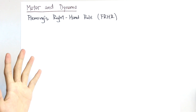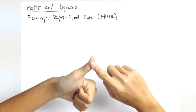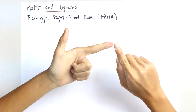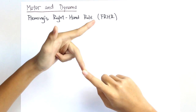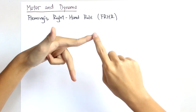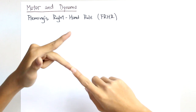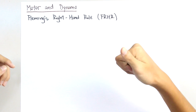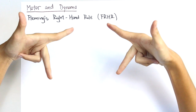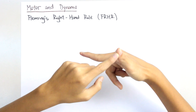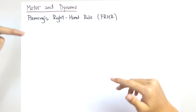Since Fleming's right-hand rule and Fleming's left-hand rule are the same, we know that for Fleming's left-hand rule, the thumb represents force, the index finger represents magnetic field, and the middle finger represents current. We remember this using the keyword FBI — Force, magnetic field, and current. The same thing applies to Fleming's right-hand rule using FBI, with exactly the same posture, just with the right hand instead of the left.